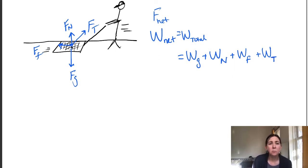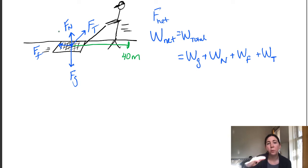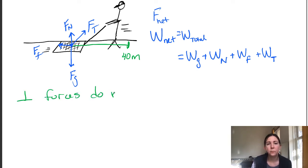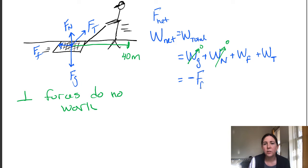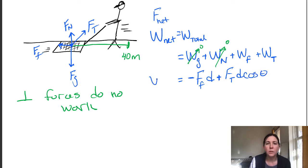If this man is moving the screen a distance of 40 meters across the field, the normal force and force of gravity are perpendicular to the displacement, so perpendicular forces do no work — work done by gravity is zero, and work done by the normal force is zero. Friction is always 180 degrees from the direction of travel, so it always does negative work. Net work equals negative friction force times displacement, plus tension force times displacement times cosine of theta.